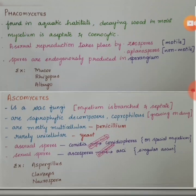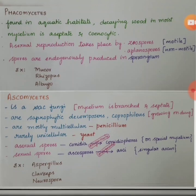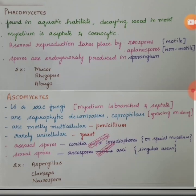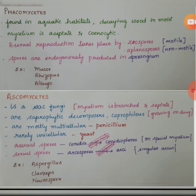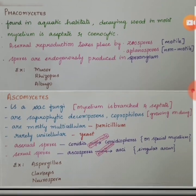Their asexual spores are called conidia, which are exogenously produced and are produced on special mycelium. Their sexual spores are called ascospores, and if endogenously produced they are contained in structures called asci — A-S-C-I — the singular of which is ascus.